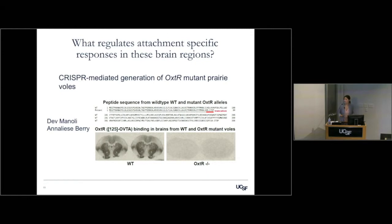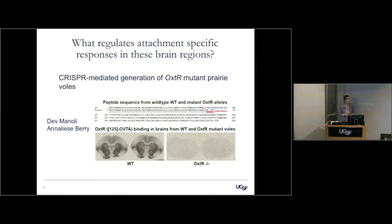In the peptide sequence you can see a premature stop codon that results in a truncated, non-functional protein. In the imaging below, a ligand binding assay shows robust binding throughout wild-type brains indicating the oxytocin receptor is expressed, whereas in the oxytocin receptor knockouts it's completely gone — a complete null for this receptor.